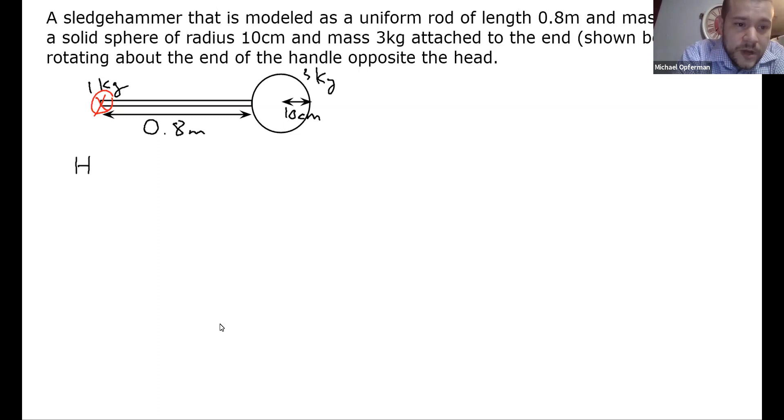So let's do a calculation over here for the handle, and we'll do a calculation over here for the head. So let's start with the handle. The handle has mass one kilogram, it has length 0.8 meters, and in terms of its size and shape, it is a rod rotating about its end point.